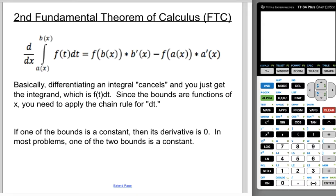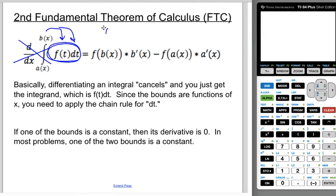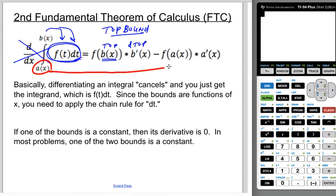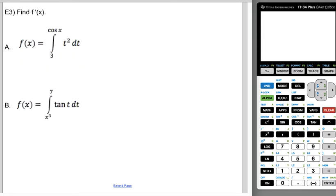Let's talk about the second Fundamental Theorem of Calculus — the second FTC. When you differentiate an integral, they are opposite operations and they cancel. What ends up happening is you get the integrand out, but you plug in the bounds. Plugging in the top bound gives f of the top bound times the derivative of the top bound; plugging in the bottom bound gives f of the bottom bound times the derivative of the bottom bound. Most of the time, one of the two bounds is a constant and it just goes away.